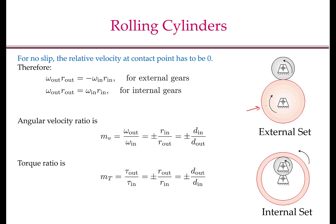Let us assume the big cylinder is attached to the input shaft and the smaller cylinder is attached to the output shaft. Since the input shaft is rotating in the clockwise direction, the contact point on the bigger cylinder tends to move towards the right, so the friction force Fg acts to the left. This friction force has an equal and opposite reaction Fp acting on the smaller gear, which creates a moment in the anticlockwise direction about its center. So the smaller cylinder moves in the anticlockwise direction, confirming that for an external pair of rolling cylinders the direction of motion of the two mating cylinders will be opposite to each other.